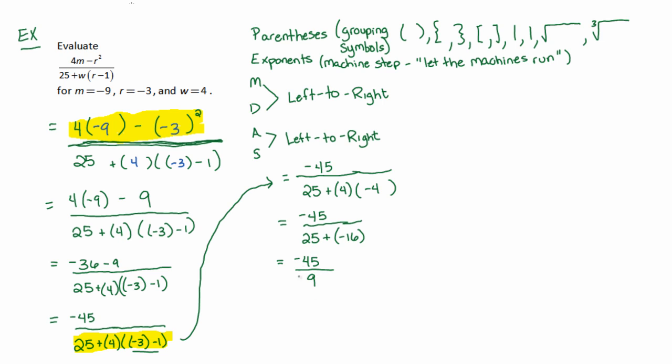Now the last step I need to do is make sure that this fraction can be simplified or is simplified if it can't be. And it turns out that 9 actually divides nicely into negative 45, divides in negative 5 times.